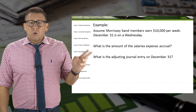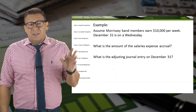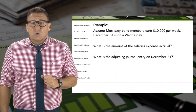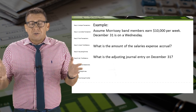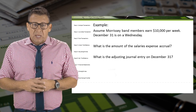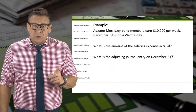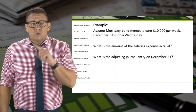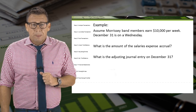Assume Morrissey band members earn $10,000 per week. December 31st is on a Wednesday. Let's figure out how much salary needs to be accrued and then how to record the adjusting entry.